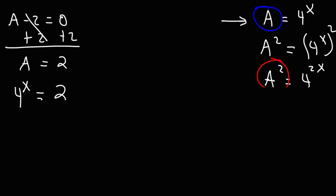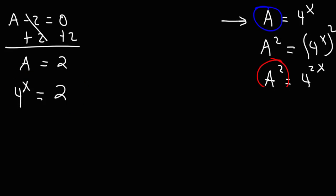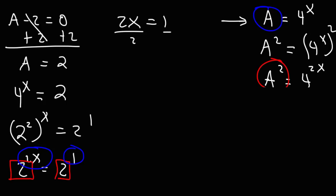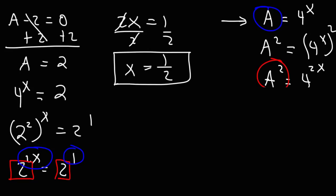So now let's finish the problem. If 4 to the x equals 2, what is the value of x? We can replace 4 with 2 squared, since 2 squared equals 4. Then 2 squared raised to the x equals 2 raised to the 2x, and 2 is basically 2 to the first power. Since the bases are the same, the exponents must be equal: 2x equals 1, therefore x equals 1 half. And this is the answer to the problem.